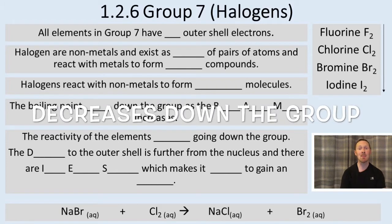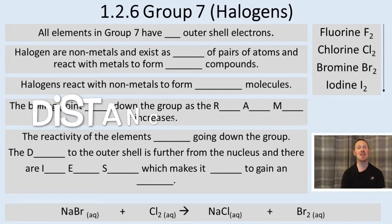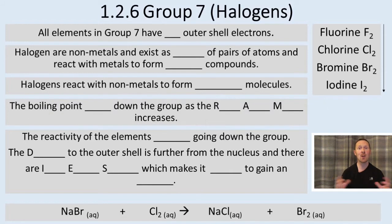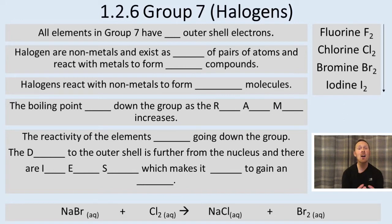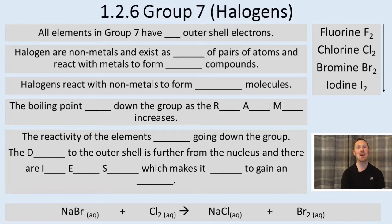The acronym's the same, DIES. The reason they get less reactive is the distance from the positive nucleus to the outer shell gets further as you go down the group, and there's more inner electron shielding. This means it's harder to gain an electron to form a negative ion. That is why the reactivity decreases.